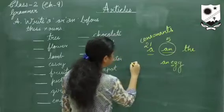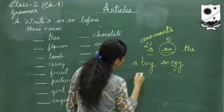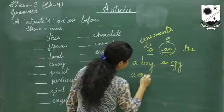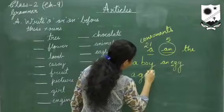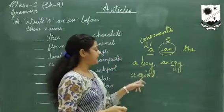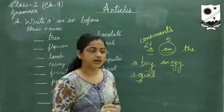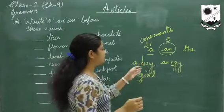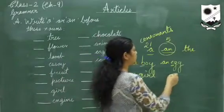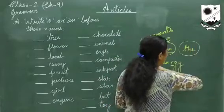For example: a boy, a girl — because they begin with consonants. B and G are consonants. So with consonants we have to use 'a'. Now moving on to the article 'the'.